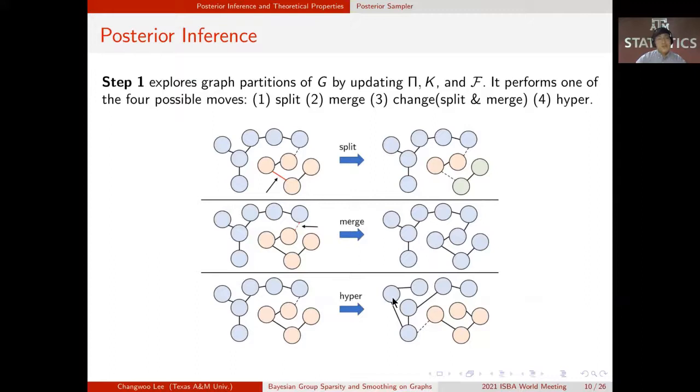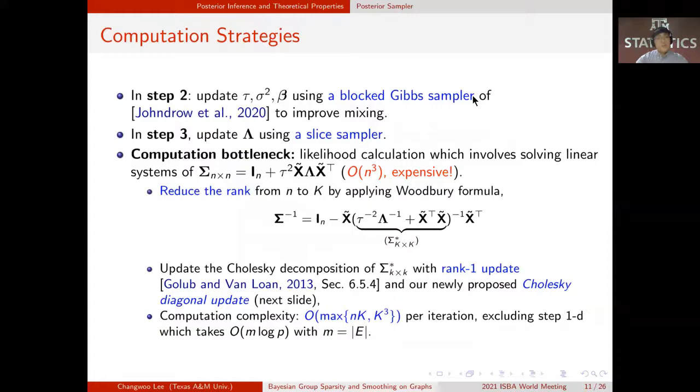Change move by performing split and merge consecutively. And hyper move by proposing different underlying spanning force F. Each move is accepted with a acceptance ratio, which is dependent on the conditional distribution of pi, K, and F. In step 2, we update global shrinkage parameter tau and variance sigma square and beta using a blocked Gibbs sampler to improve mixing.